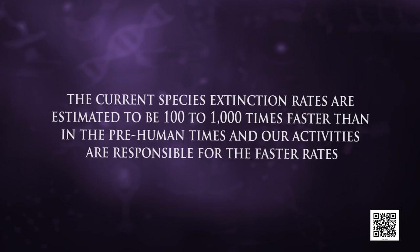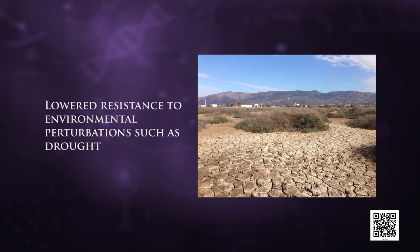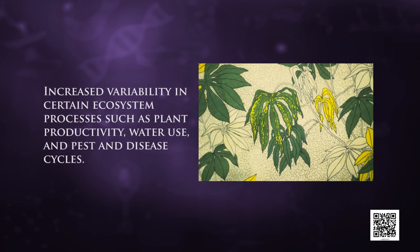The difference is in the rates. The current species extinction rates are estimated to be 100 to 1,000 times faster than in pre-human times, and human activities are responsible for the faster rates. Ecologists warn that if present trends continue, nearly half of all species on earth might be wiped out within the next 100 years. Loss of biodiversity in a region may lead to a decline in plant production, lowered resistance to environmental perturbations such as drought, and increased variability in ecosystem processes such as plant productivity, water use, and pest and disease cycles.